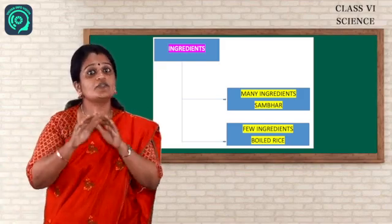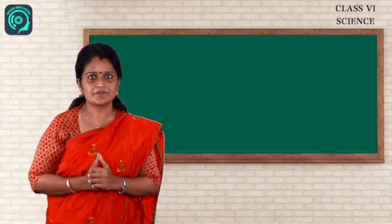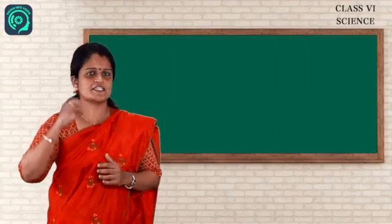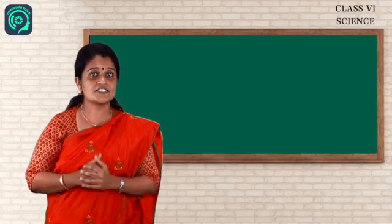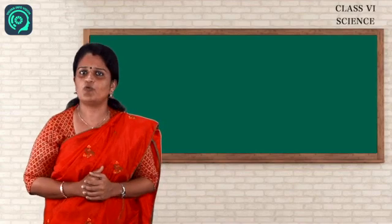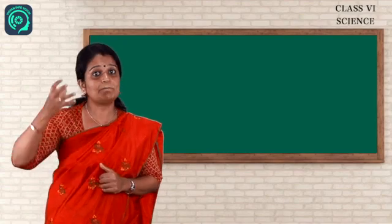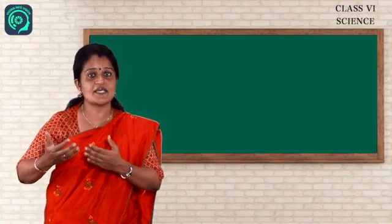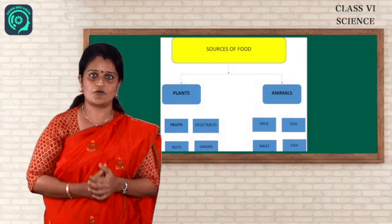So students, we studied about the ingredients. Where are those ingredients coming from? Do you know that? Yeah, I will tell you. Just take an example. Rice, wheat. Where it is coming from? From plants. Yes, very good. And what about meat, milk? From animals. So the place where we are getting this product is called the sources of food. Sources of food.